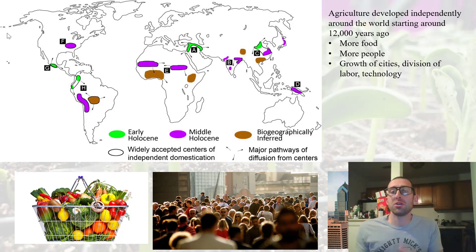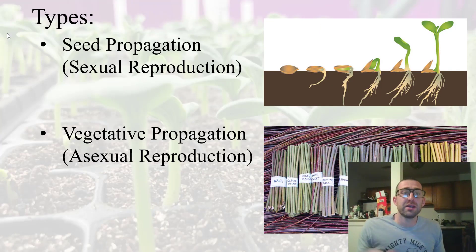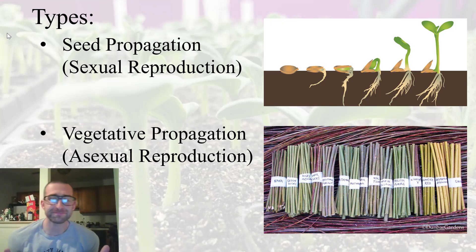So that is what we are going to be looking at in this course. We are going to look at that process, that practice, of creating new plants. Now, when we talk about propagation, we have two main types. We have seed propagation, which is the more common type, and you're probably all familiar with that. It's growing plants from seed.